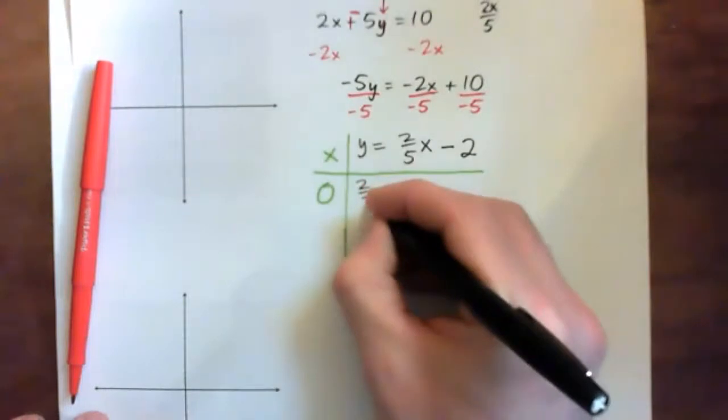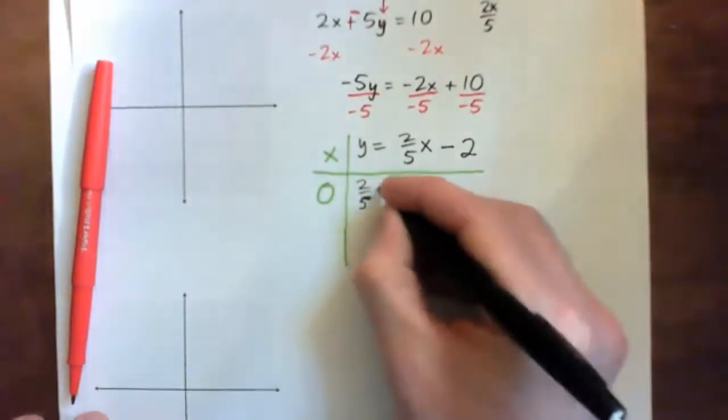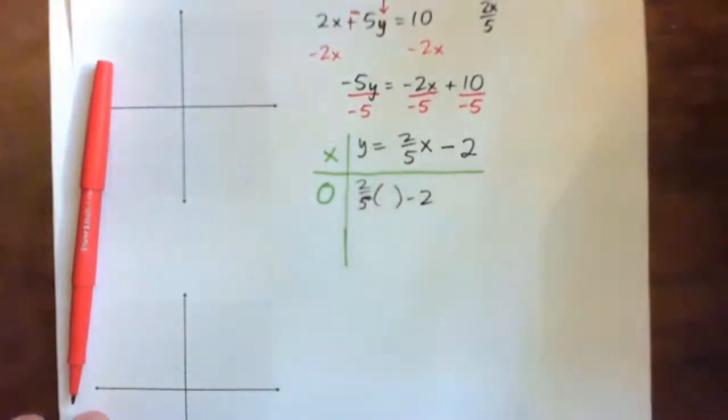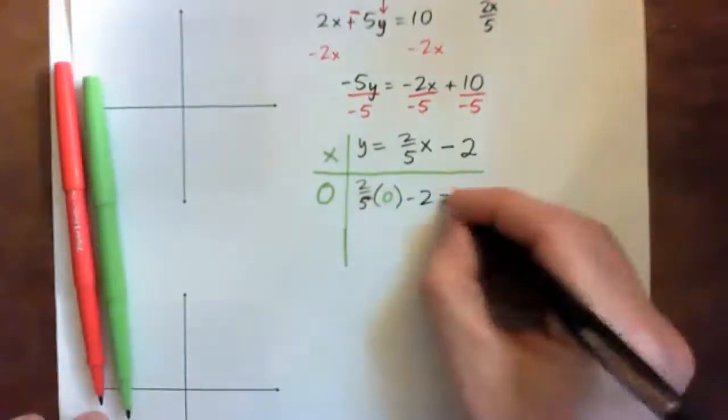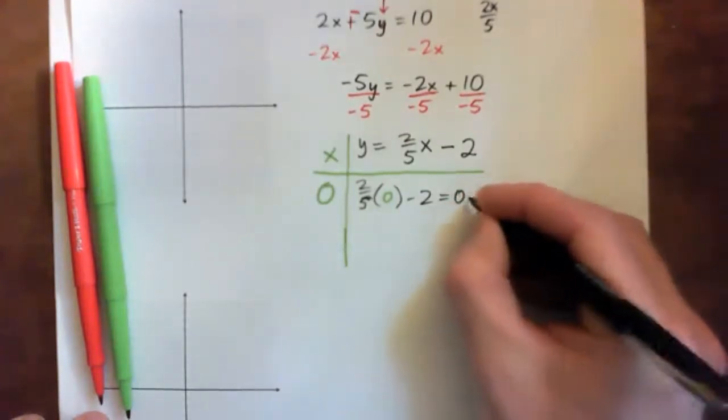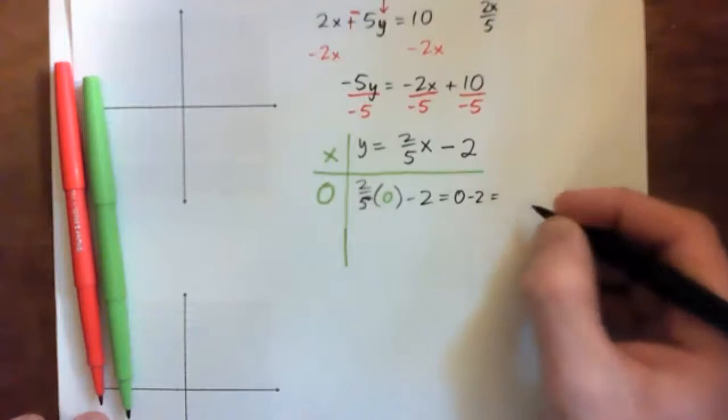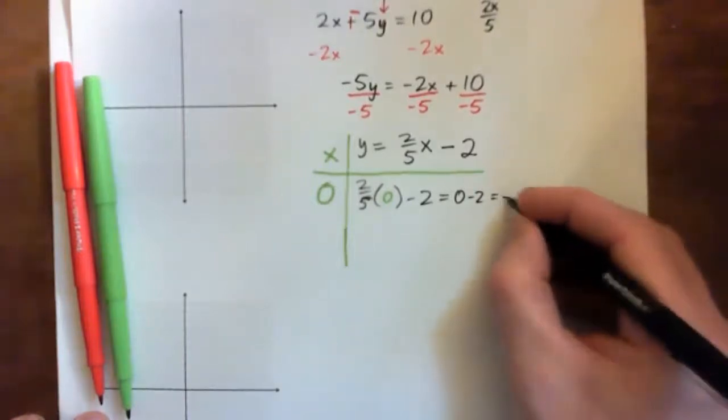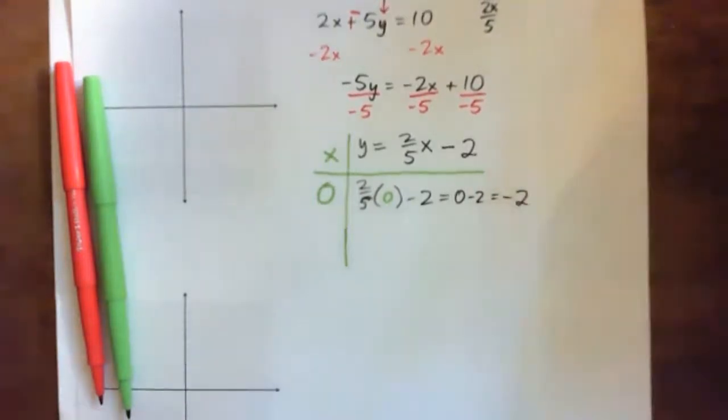If we plug 0 in, we get 2 fifths times 0 minus 2. So, we just do that one first. It should be just, well, 0 minus 2 or negative 2, right?